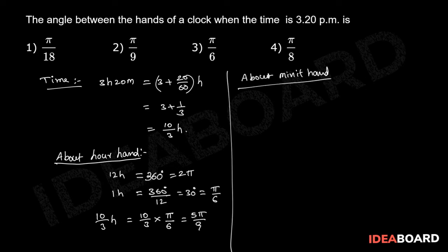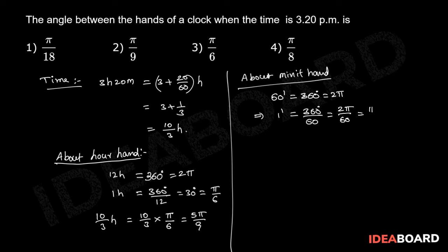The minute hand completes one revolution in 60 minutes, covering 360 degrees, equal to 2 pi radians. That implies one minute makes an angle of 360 degrees by 60, equal to 2 pi by 60, equal to pi by 30. Therefore one minute equals 6 degrees or pi by 30 radians.